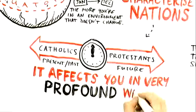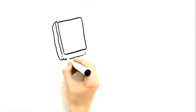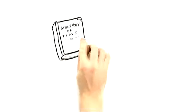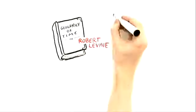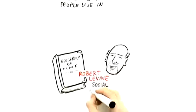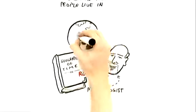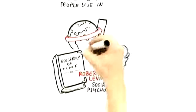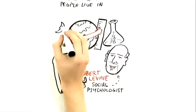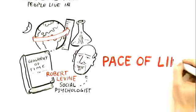It affects you in very profound ways. So there's a wonderful book called The Geography of Time, and it's written by a dear friend of mine, Robert Levine, who's a social psychologist. And he actually went around the world doing wonderful experiments.